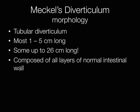Meckel's diverticulae are tubular structures, usually approximately 1–5 centimetres long, although some can be as long as 26 centimetres.